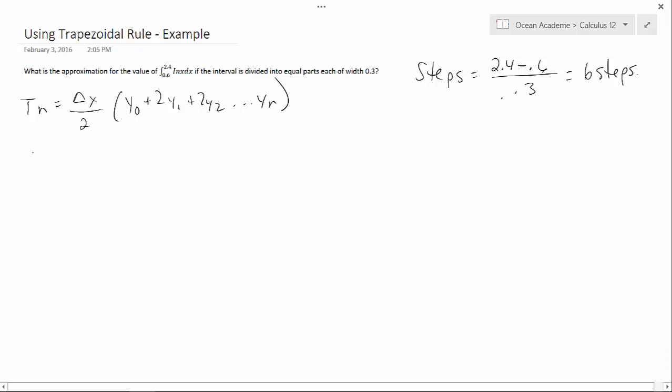Now what that means is, if we can just fill this in, our change in x is the width so that's 0.3 divided by 2 and we look to our equation. So we've got log x. So our x will become 0.6. We go 0.3 and then plus 0.3.